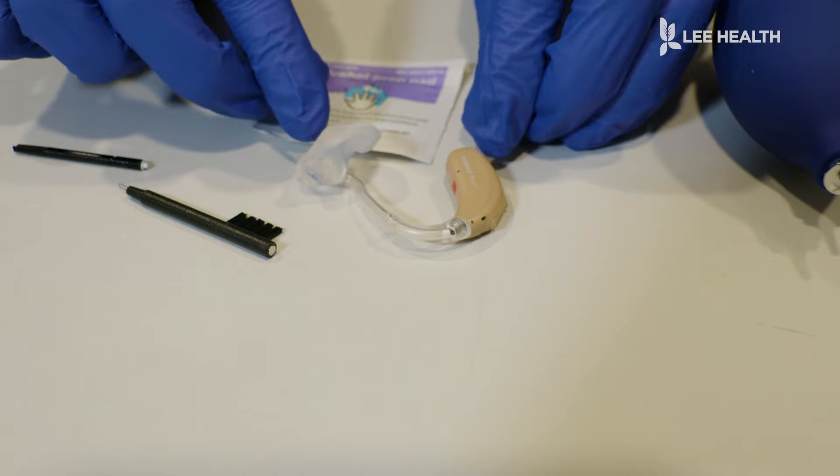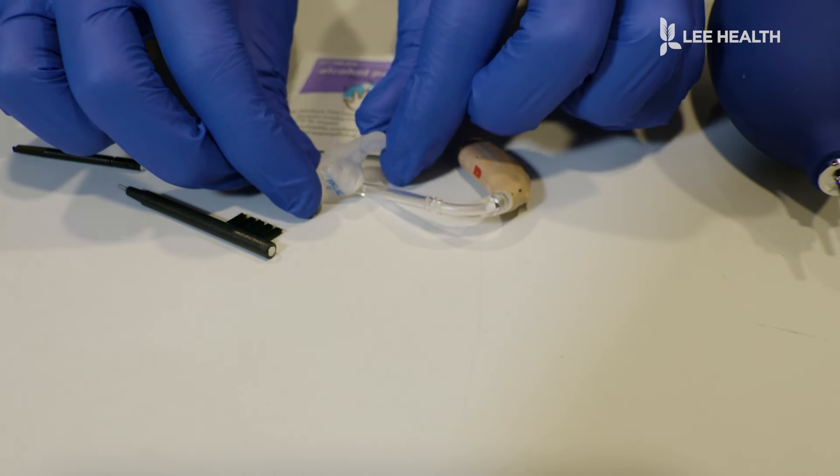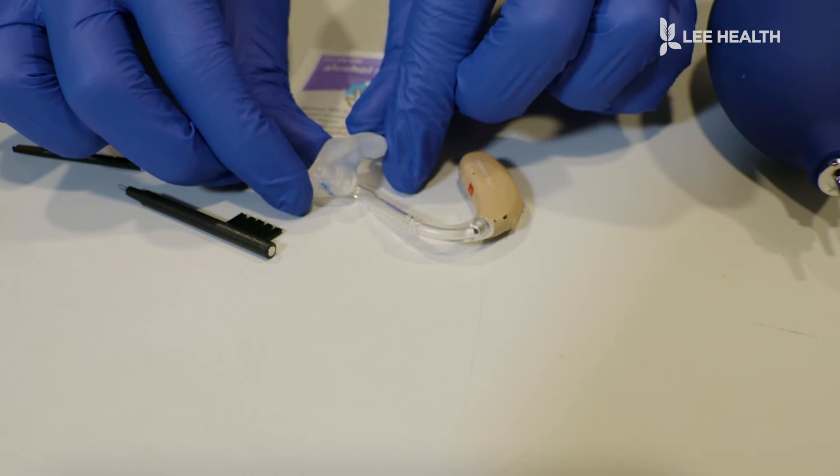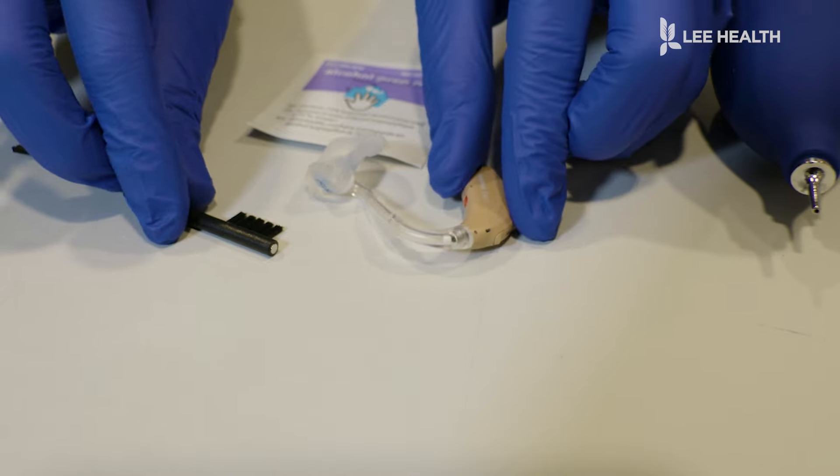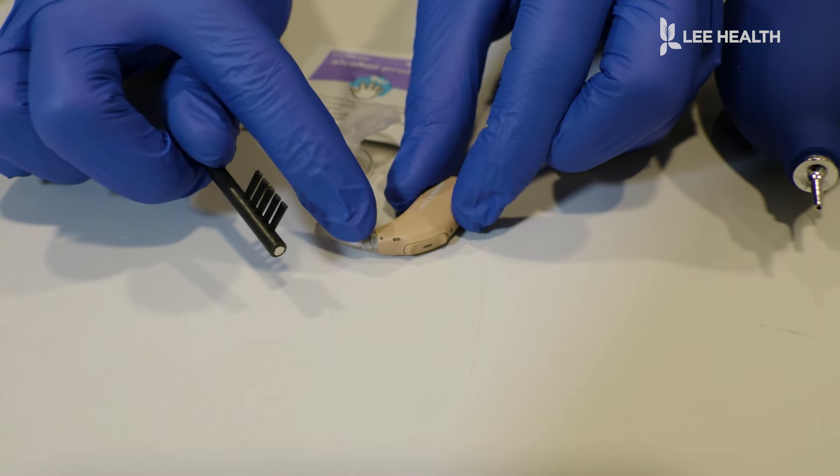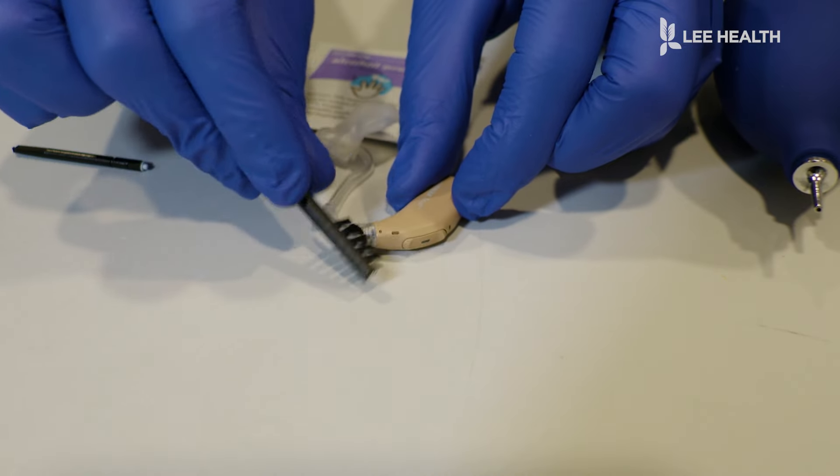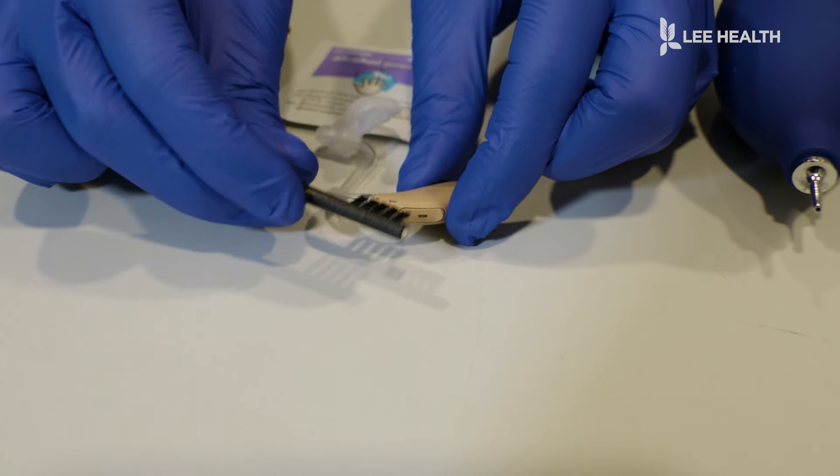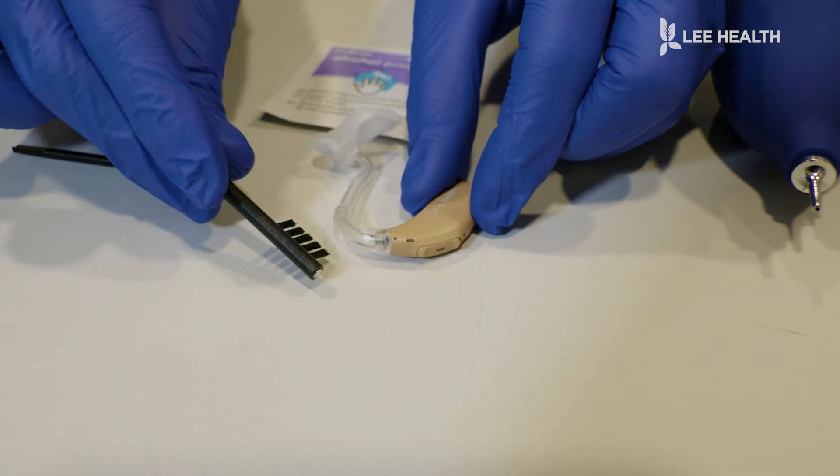For these more custom hearing aids, the behind-the-ear with the custom piece, either silicone and acrylic, we're going to go through how to clean that. First, I always take this little brush, and I just brush off these small holes and openings at the top of the hearing aid. Those are the microphone holes where the sound goes in, so you want to make sure that those stay nice and free from any debris.